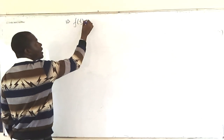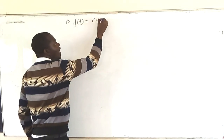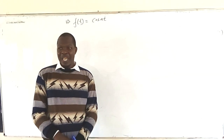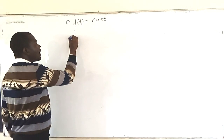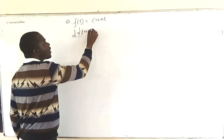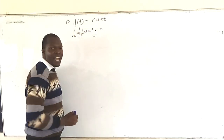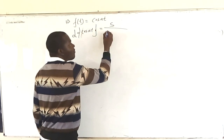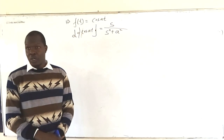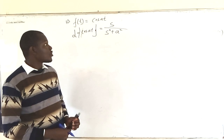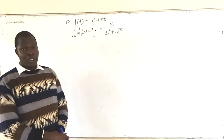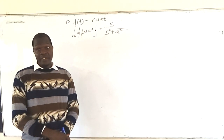If f(t) is cos(at), what is the Laplace transform? The Laplace transform of cos(at) is given as s over s squared plus a squared. We want to see how that is coming about.